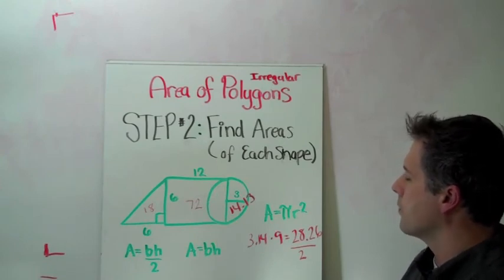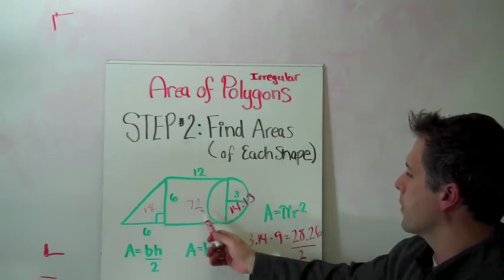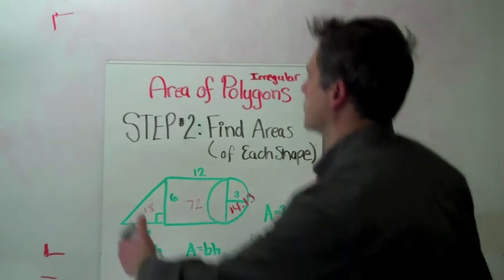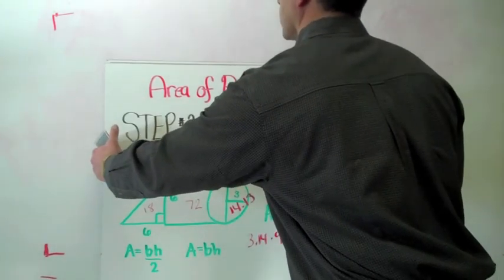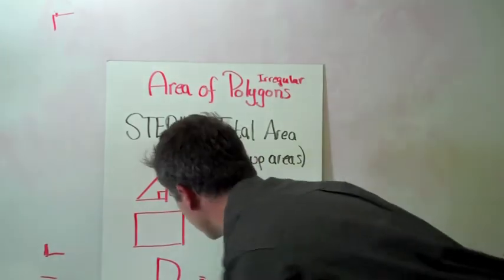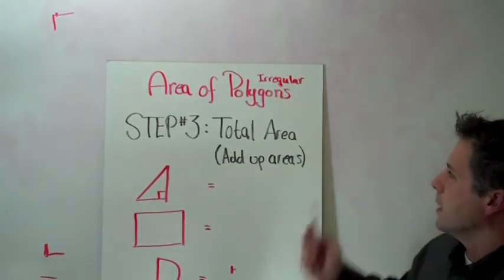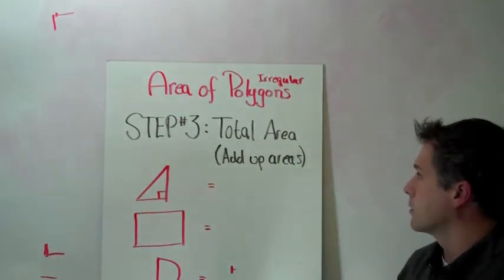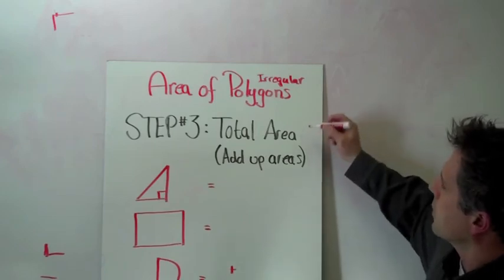So there we have it. We have the area of the triangle, of the rectangle, and of the circle. So let's go to our next and last step. We need to total the areas. Okay, the total area.